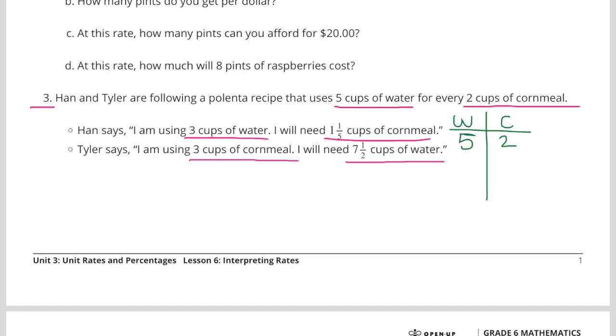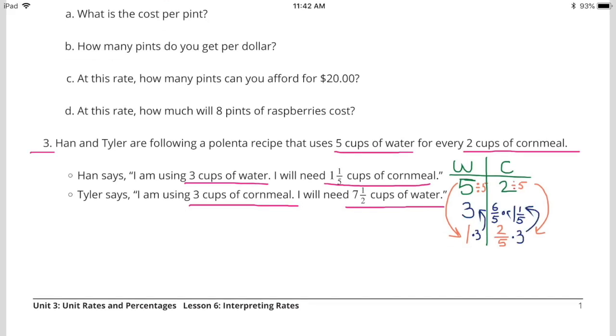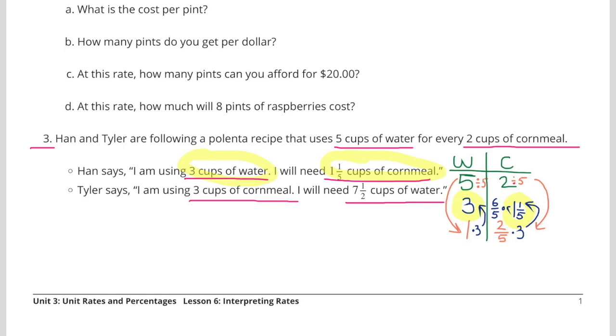I made a chart with water on the left and cups of cornmeal on the right. 5 cups of water for every 2 cups of cornmeal. 5 divided by 5 to get 1 cup of water, and 2 divided by 5 to get 2⁄5 of a cup of cornmeal. So every 1 cup of water, they would need 2⁄5 of a cup of cornmeal. Now that we know how much cornmeal we need for 1 cup of water, we can multiply that 1 cup of water times 3 to make 3 cups of water for Han. When we multiply 1 cup of water times 3, we'll also have to multiply 2⁄5 times 3, which would give them 6⁄5 or 1 1⁄5 cup of cornmeal. Exactly what Han said he would need.